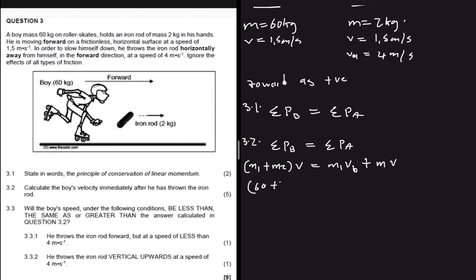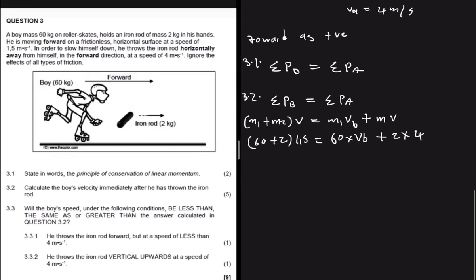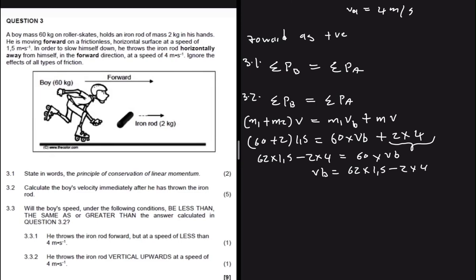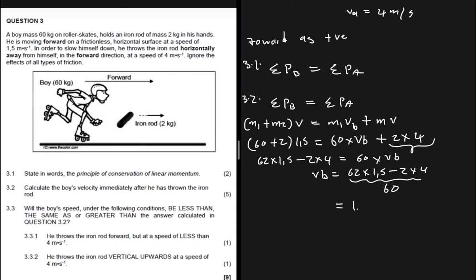The combined mass before is 60 plus 2 kg at 1.5 m/s. This equals 60 kg multiplied by the boy's unknown velocity, plus 2 kg multiplied by 4 m/s. Rearranging: 62 × 1.5 minus 2 × 4, all divided by 60. Punching that into the calculator gives 1.416 recurring meters per second.